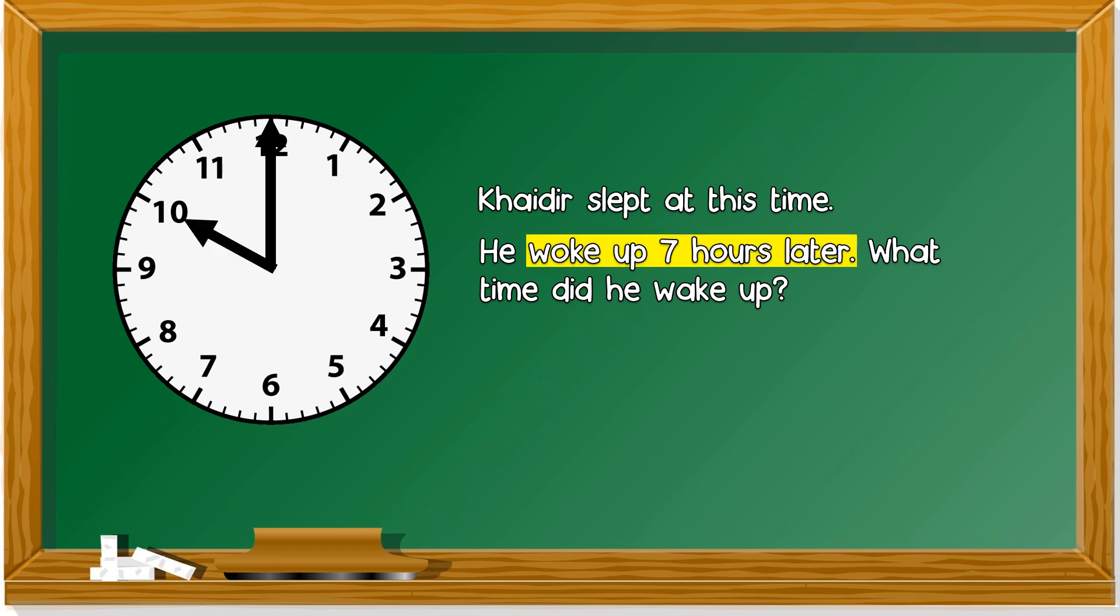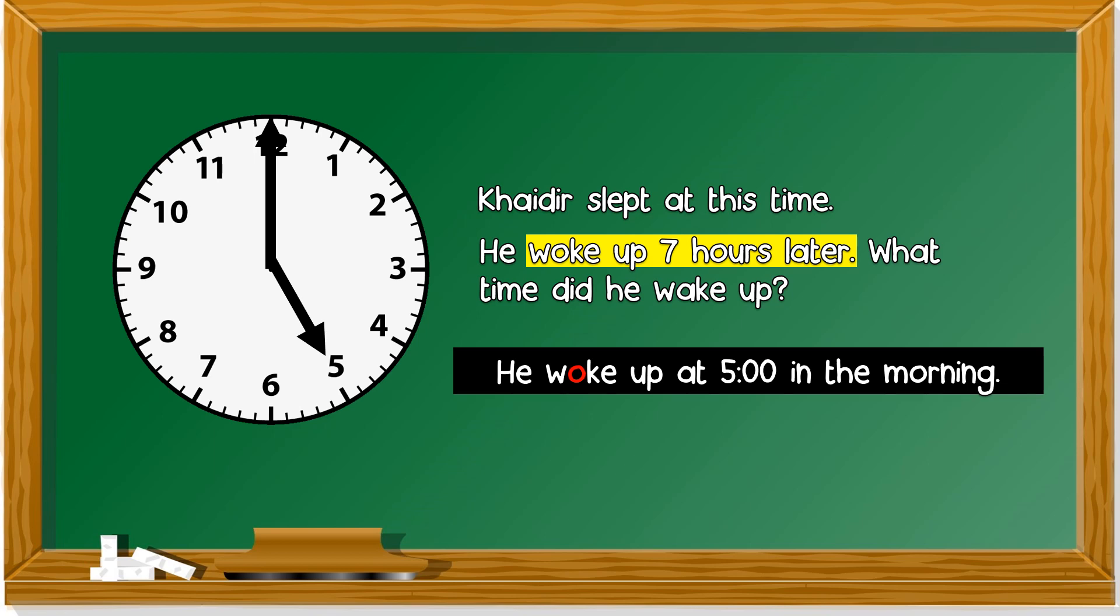From 10 to 11 is 1, 2, 3, 4, 5, 6, 7. Seven hours later is 5 o'clock. Is it morning or evening? Since he slept at night, it's morning. He woke up at 5 in the morning.